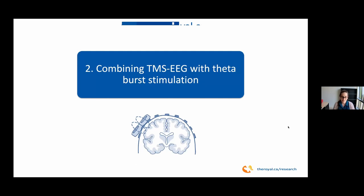However, as with other NIBS techniques, we don't fully understand the mechanisms of action of Theta Burst Stimulation. When using Theta Burst or RTMS in clinical populations, we face the issue that stimulation parameters are determined in the motor cortex, but we don't know if those parameters apply to other brain regions — especially the prefrontal cortex, which is anatomically very different from the well-organized motor cortex. This is where combining TMS-EEG with Theta Burst can be very interesting.